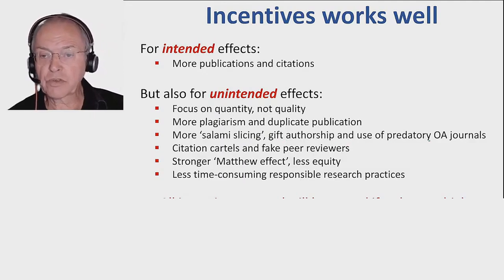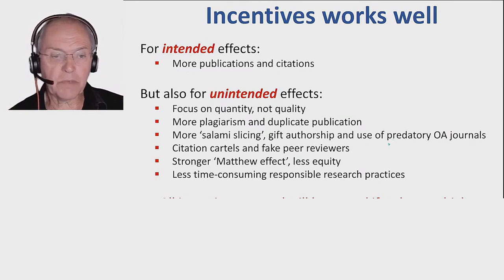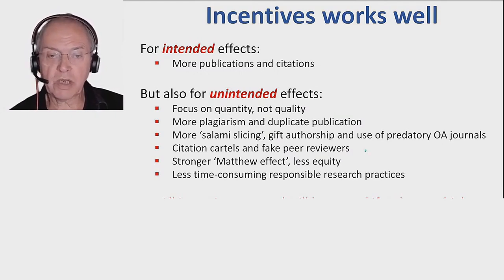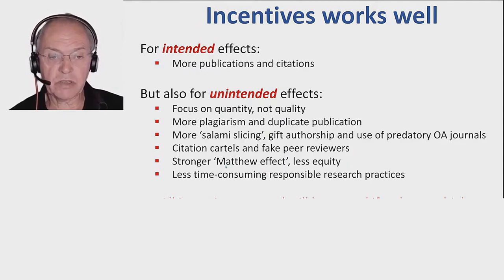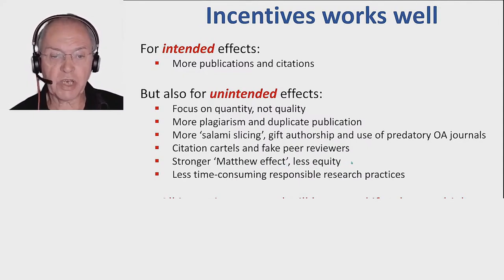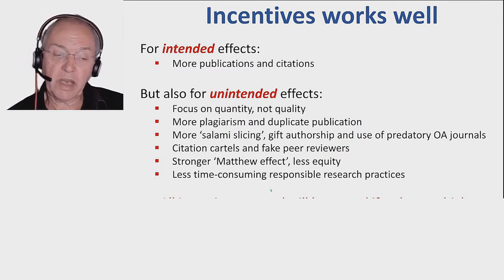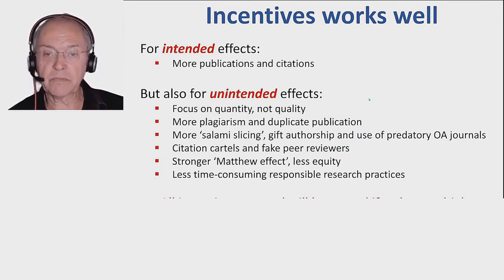You get much more plagiarism and duplicate publication, salami slicing — also mentioned earlier this morning — gift authorship, use of predatory open access journals because they are so flexible in accepting your paper. You see citation cartels, fake peer reviewers — the idea is that you suggest a reviewer, open an email address that feeds into your own mailbox, and then you write your own peer reviews, and your paper gets accepted. It makes the rich richer — the Matthew effect — leading to less equity, because when you are successful you attract more success, first and foremost by getting more grants. And people tend to shy away from the time-consuming responsible research practices. When the incentives are simple, they will be gamed because the stakes are so high.